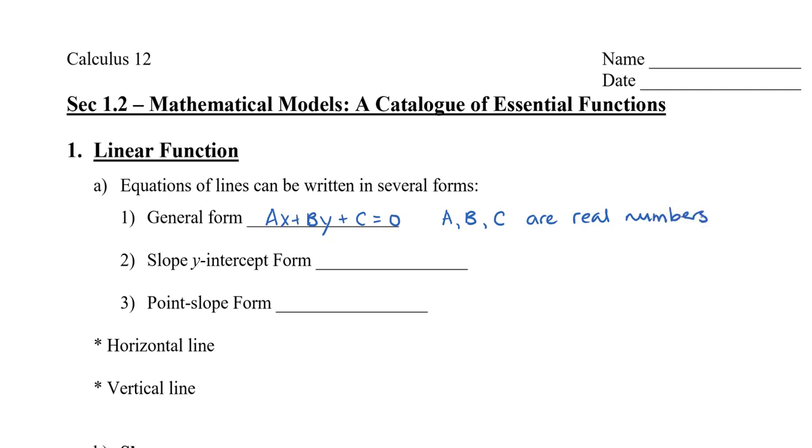The next form is slope y-intercept form, and this is written as y = mx + b. m is the slope, so that number tells us the slope, and the number b tells us the y-intercept.